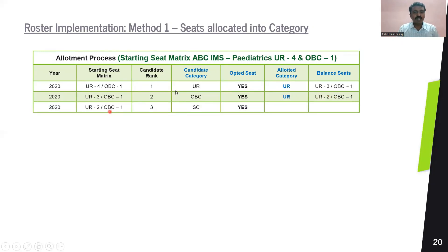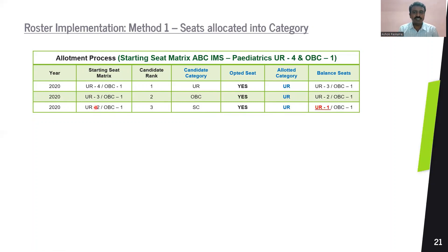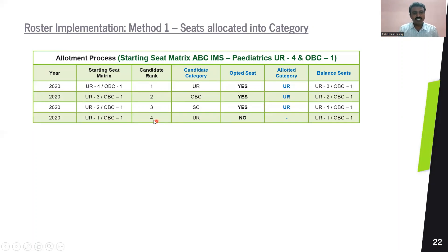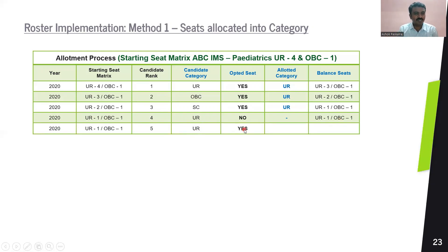The next candidate is an SC candidate. The seats available are UR two and OBC one. An SC candidate is eligible for UR seats, and since there are no SC-specific seats, the UR seat is allotted to the SC candidate and the balance reduces by one. Now you have one UR and one OBC seat. Candidate rank four is a UR candidate but does not opt for a seat — no seat is reduced. Candidate five is also a UR candidate who opts for a seat; one UR seat is available, so the candidate is allotted that UR seat. Only one OBC seat remains.